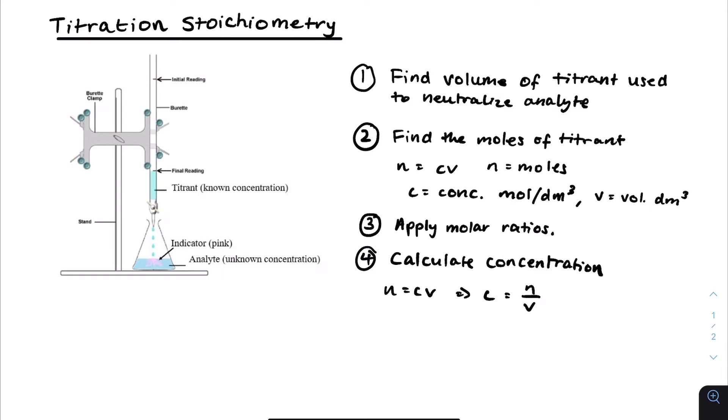We've got the number of moles of the analyte now, and we've got the volume of the analyte used. As I was saying, the analyte is taken via a pipette, a 25 centimeter cubed pipette, and measures that 25 centimeters cubed of the liquid and places it in the flask. Therefore, the volume would be 25 over 1,000. That would be about 0.025 dm cubed. Doing moles divided by the volume will give you the concentration of the analyte.